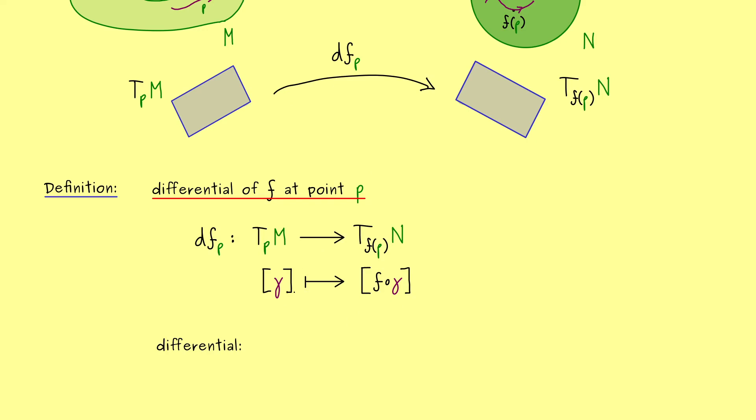Maybe you remember in calculus we would do that for all points and call the result the derivative of the function f. We can do a similar thing here and call the result df the differential of f. It maps the manifold M into the space of linear maps by using a point p and sends it to the differential at the point p. Not complicated at all but definitely something to keep in mind for later videos.